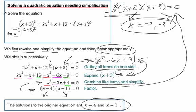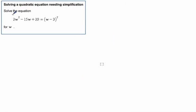So let's look at another example. We're solving for w. So the first thing we can do is we could say, oh, all right, I'm going to rewrite everything. Minus 15w plus 29. And I'm just going to subtract the quantity w minus 3 squared, and it's going to equal zero. Great.